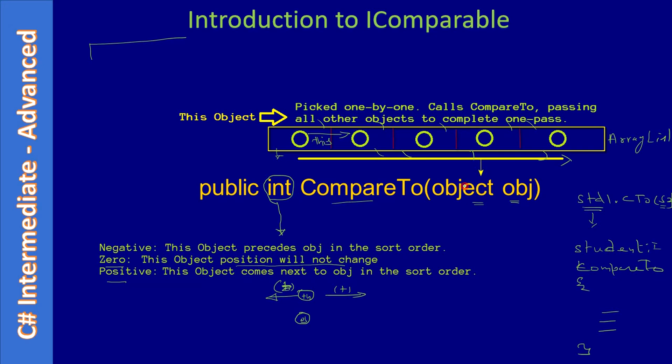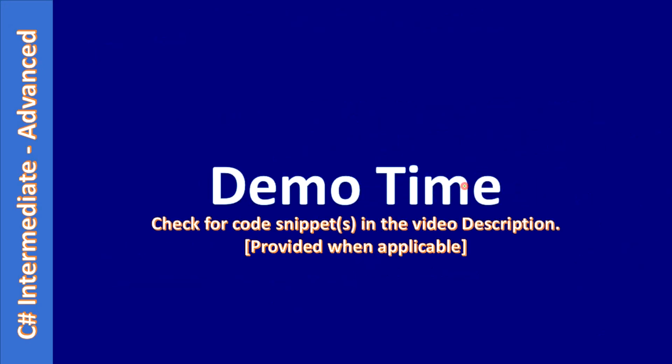When we write the CompareTo method, we pick a specific member of the Student class, use boolean operators, and decide what to return: zero, positive one, negative one, or simply a positive or negative value. That's all for this video. It may be a little bit confusing now, but when we go through the example in the next video, we will clearly understand it. Thank you for watching, bye.